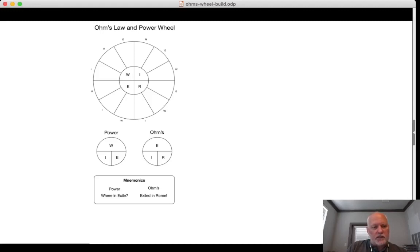The wheel is designed in a specific way. The horizontal bars going across represent division or the fraction bar. The vertical bar between the I and the E and the I and the R represents multiplication. So when I say W is equal to I times E, that's because using the wheel, W is on top and it's equal to the product of I and E because of the vertical bar.